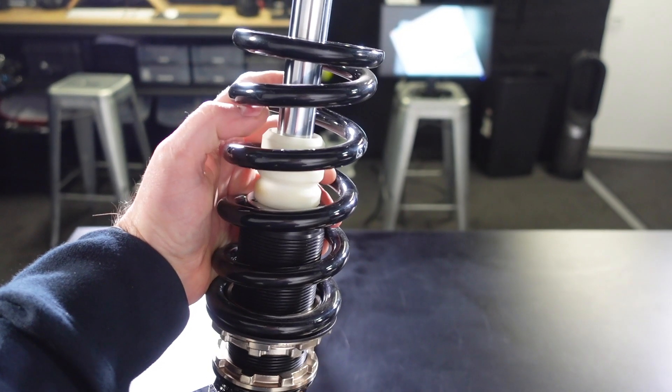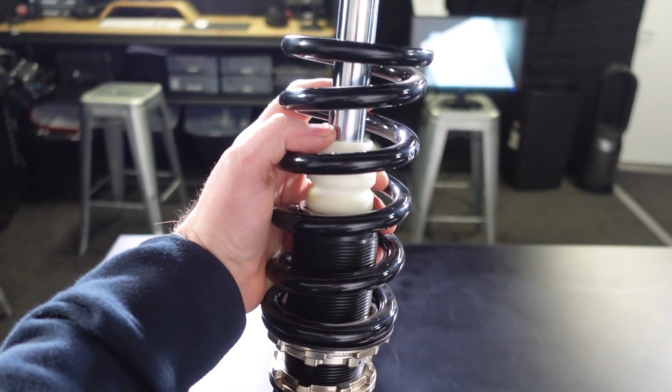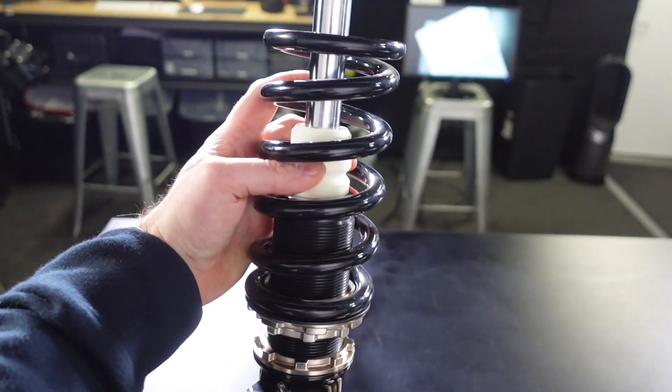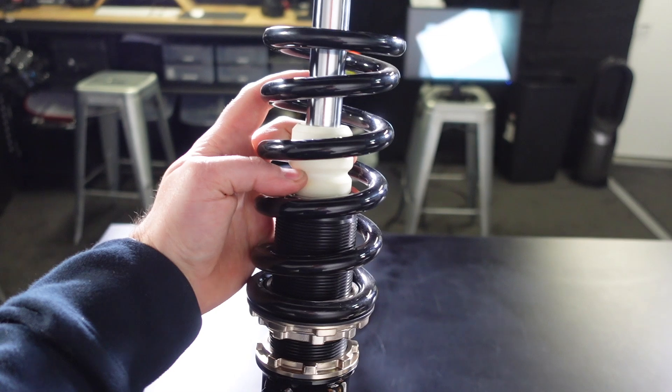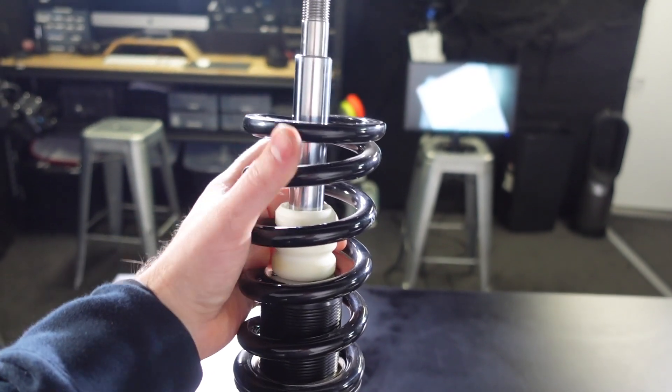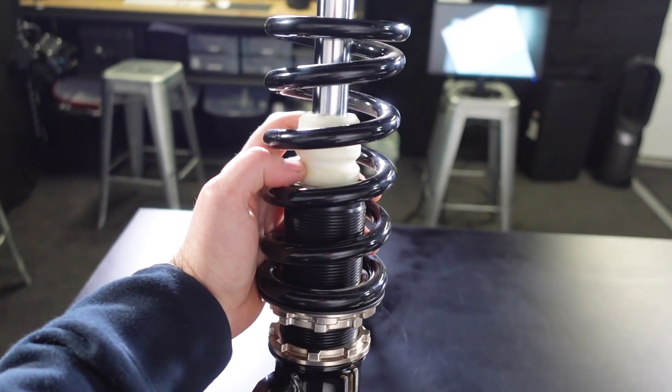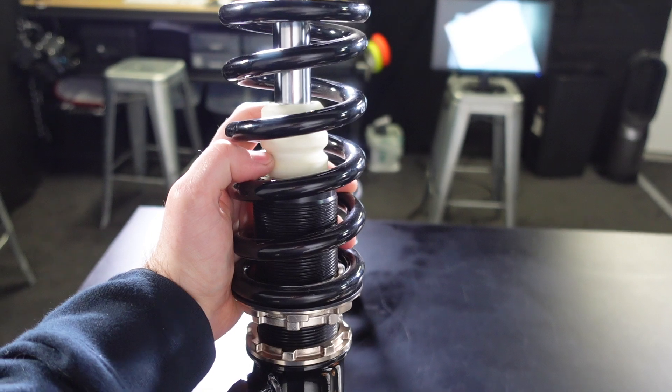The spring and the bump stop are working together to provide a resistive force inside the suspension. The rate of the bump stop in an OEM application is generally quite a lot higher than the spring, because you're really just trying to resist that last bit of force to stop the suspension components causing any damage when you're at or very close to maximum travel.